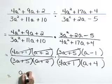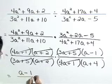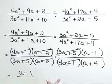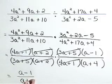This leaves us with the reduced form, also called lowest terms, a minus 1 over a plus 4.